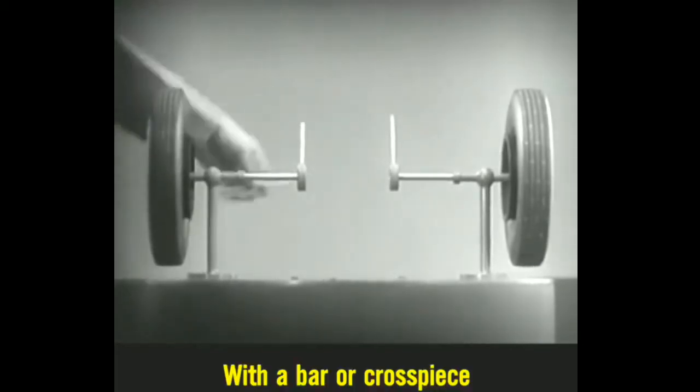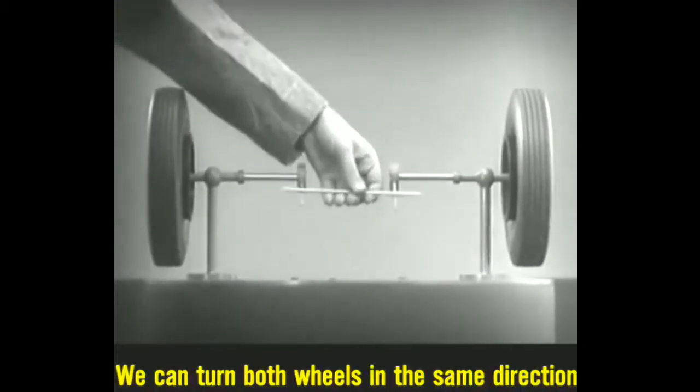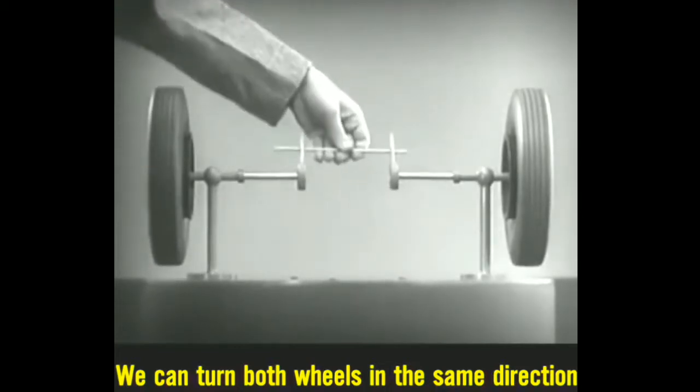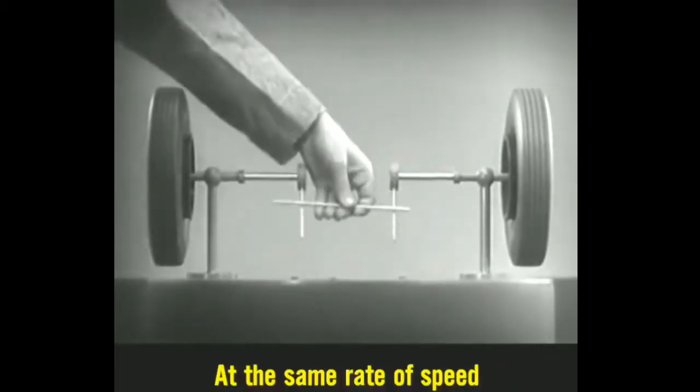With a bar or cross piece, we can turn both wheels in the same direction at the same rate of speed.